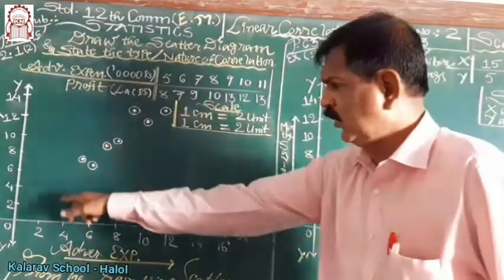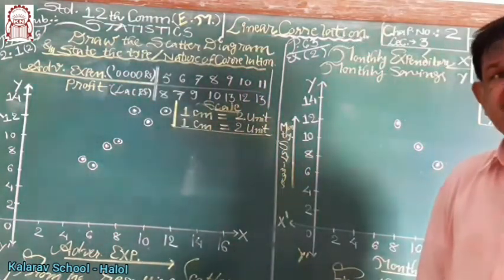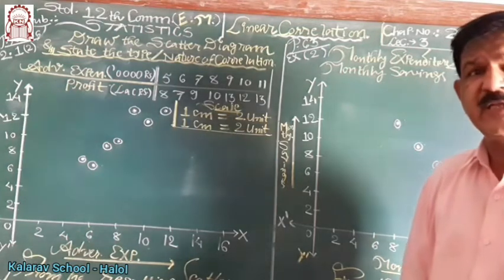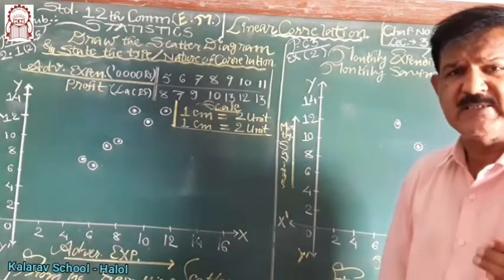Now, the resulting diagram is known as the scatter diagram. From the shape of the diagram, we can say the type or the nature of correlation existing between them.